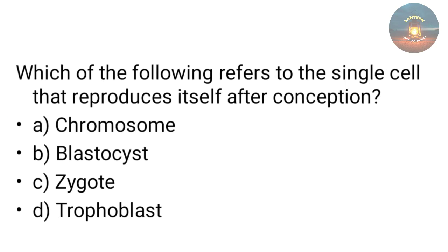Which of the following refers to the single cell that reproduces itself after conception — chromosome, blastocyst, zygote, or trophoblast? The answer is zygote. The zygote is the first single cell, which then divides and reproduces to form a fetus.